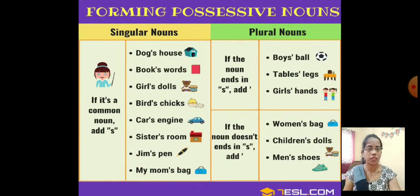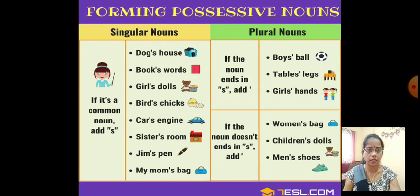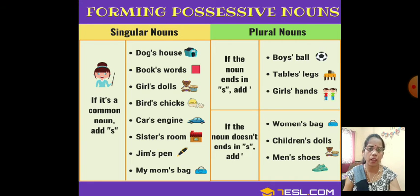More about the possessive noun — forming possessive nouns, singular nouns and plural nouns. For a singular common noun, add apostrophe-s. Like: dog's house, sister's room, gym's pen, my mom's bag, books, words, girls, dolls, birds, chicks, cars, engine. All these, when it is a common noun, we can add the apostrophe-s form.